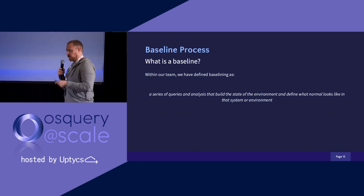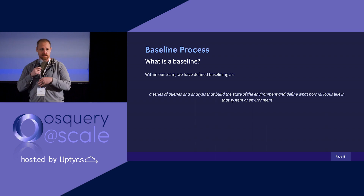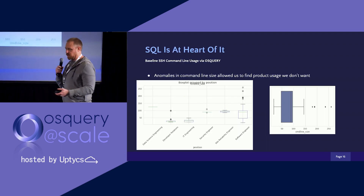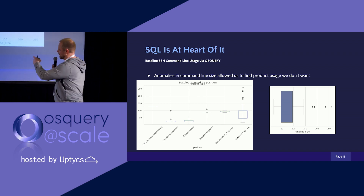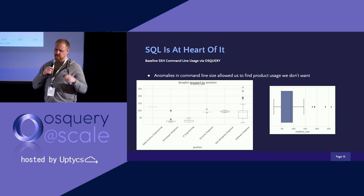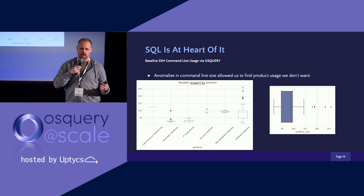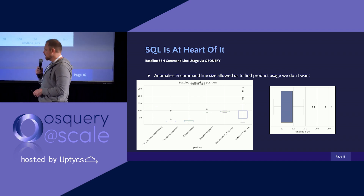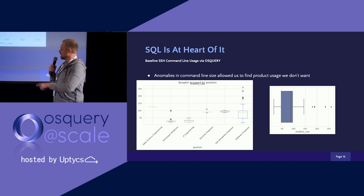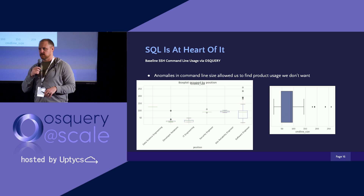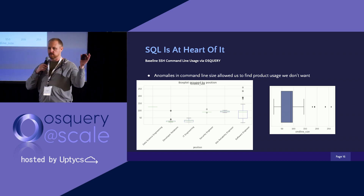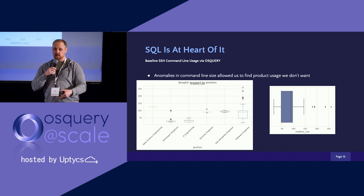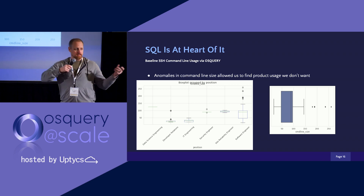A baseline is a series of queries that analysts can build — basically asking questions of our network. What's the average command line size of SSH actually being used? We can pull that from OSquery. We're a very Unix-heavy, all-Unix shop, so SSH is commonly used — standard DevOps tooling as well as system administration toolkits. We can go to OSquery and take all the SSH processes for the past 24 hours or 30 days, pull it down, and decorate it based on teams, what they do at Stripe, time zones, and work hours — then start looking at what that means to us.